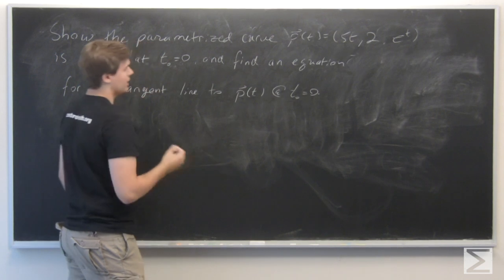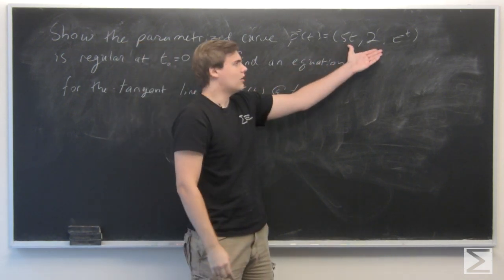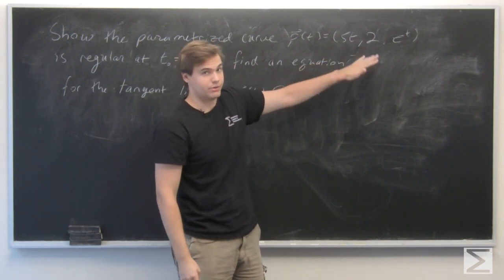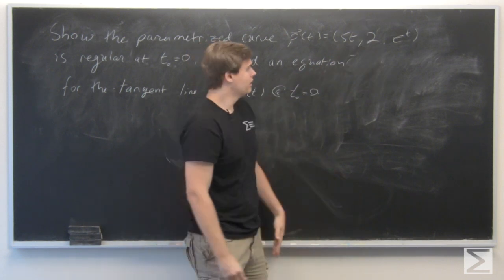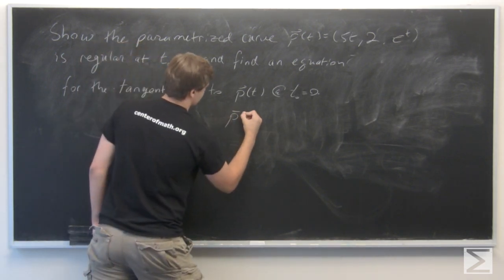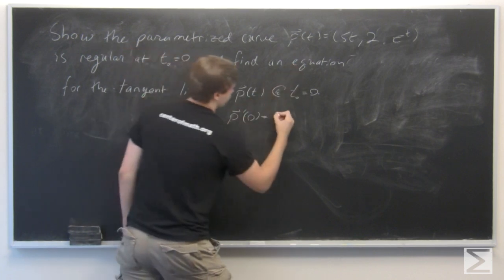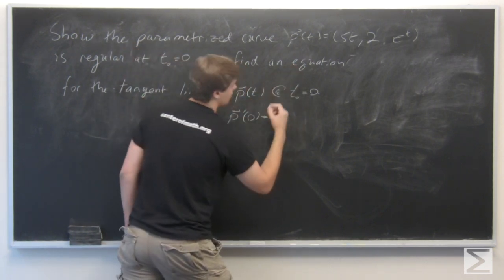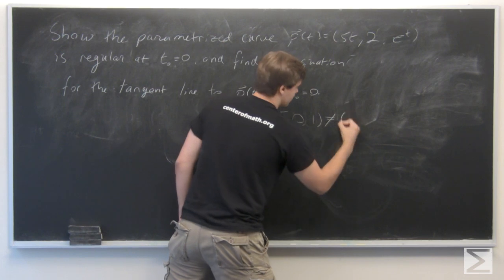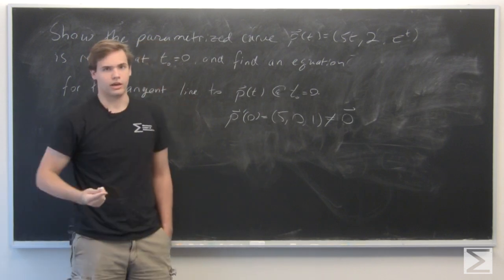We notice that p of t — all of its components are nice smooth functions, that is, the derivative exists and is continuous for all orders of the derivative. So in particular, it exists at t equals 0. So p prime of t at 0 is given by (5, 0, 1), which is in particular not the zero vector. So p of t is regular at t equals 0.